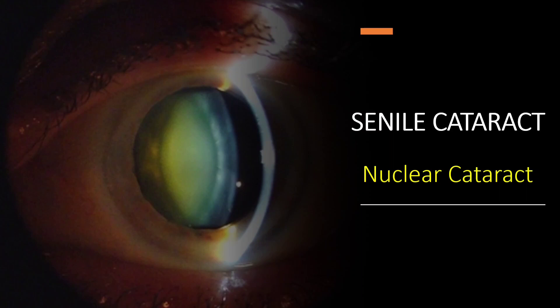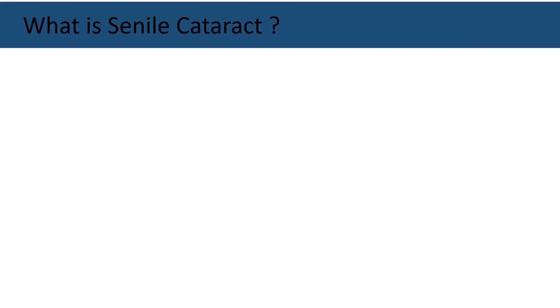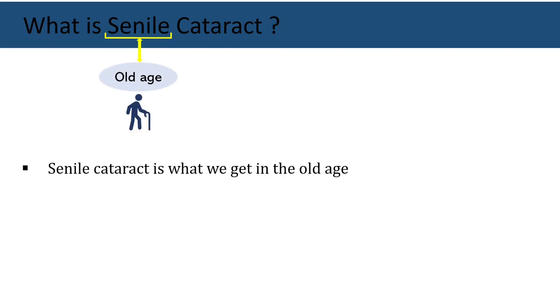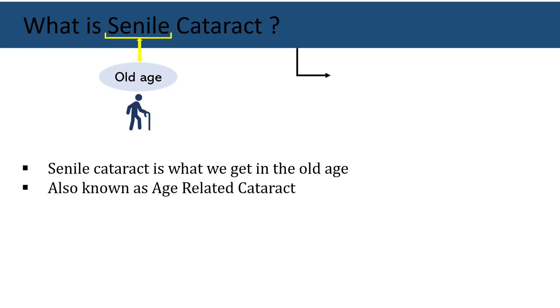Out of those, first we'll pick senile cataract, in which I'm going to cover risk factors and causes of senile cataract, types of senile cataract, stages of maturation, gradings, and complications related to senile cataract. So first of all, what is senile cataract? The word senile itself describes old age, so senile cataract is what we get in old age. That's why it is also known as age-related cataract, and it is the most common cataract in the acquired variety. Let's see the important risk factors of this age-related cataract.